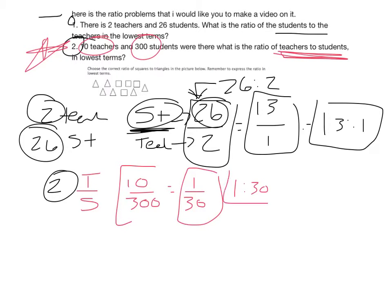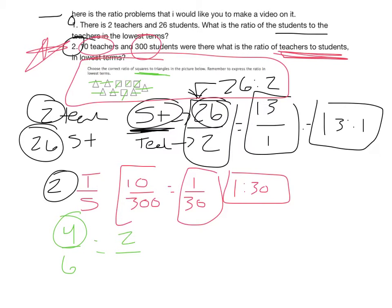And then we'll do this one just for fun. It says: choose the correct ratio of squares to triangles in the picture below. Squares go first because they mention it first. So it's one, two, three, four squares. And then one, two, three, four, five, six triangles. We reduce it - we know 2 goes into both of those. 2 goes into 4 twice, 2 goes into 6 three times. And you're done. You can write this as 2 to 3.